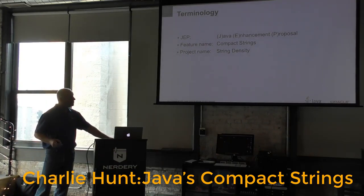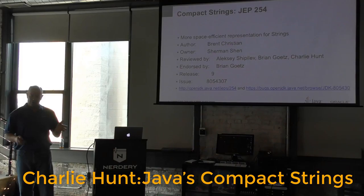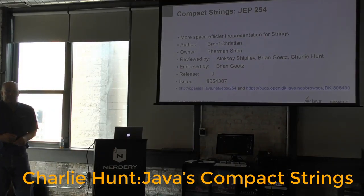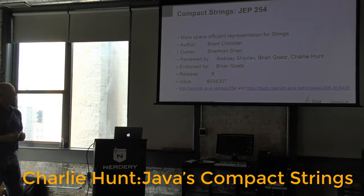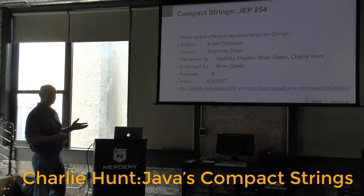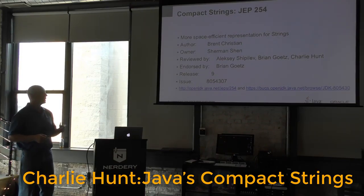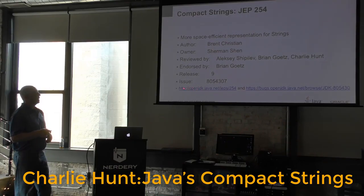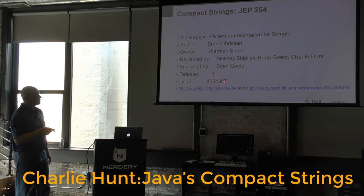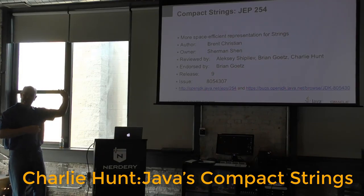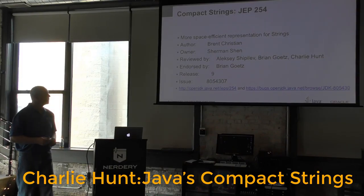Anyone can write a Java Enhancement Proposal. There's a defined structure with fields like author, owner, reviewer, endorser, target release, and an associated bug or issue number. So if you wanted to propose an enhancement to Java or the JVM, you could do that and look up the details of what the structure looks like.